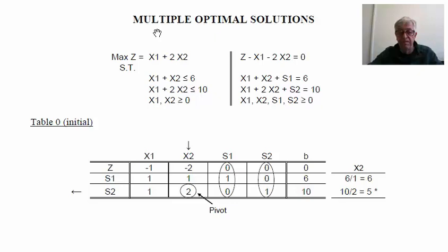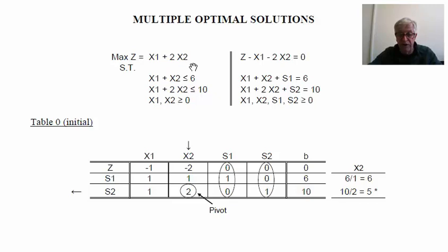Let's consider now the case of multiple optimal solutions. To illustrate this situation, we are going to use a simple linear programming problem with two decision variables and two restrictions of the type less or equal. We are going to solve this problem using the simplex method and also present the graphical solution. As before, we need to transform the restrictions by introducing the slack variables and rewrite the expression for z, transferring everything to the left-hand side.